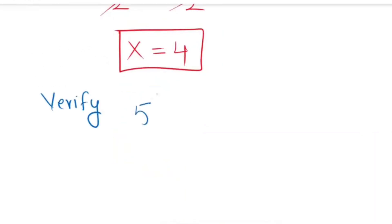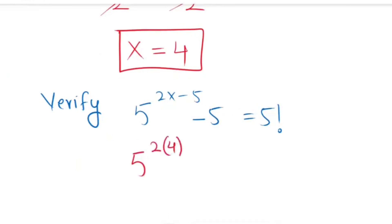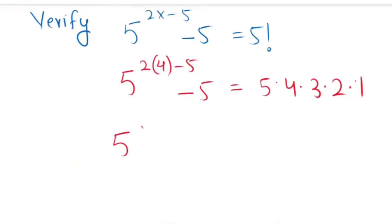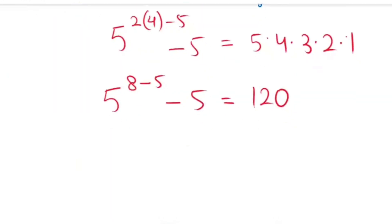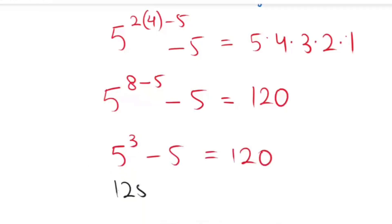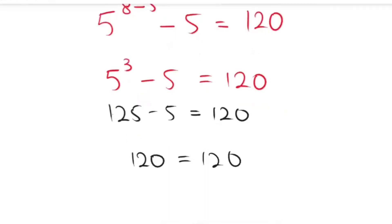Now I'm going to verify my answer. Our equation is: 5 to the power of 2x minus 5, minus 5, equals 5 factorial. Substituting x equals 4: 5 to the power of 2 times 4 minus 5, minus 5, equals 5 times 4 times 3 times 2 times 1. That gives 5 to the power of 8 minus 5, minus 5, equals 120, so 5 to the power of 3 minus 5 equals 120, and 120 equals 120. The left-hand side equals the right-hand side, so the value of x equals 4 is absolutely correct.